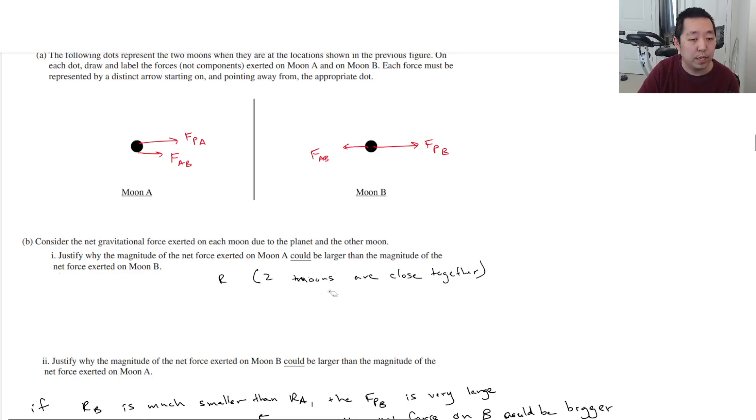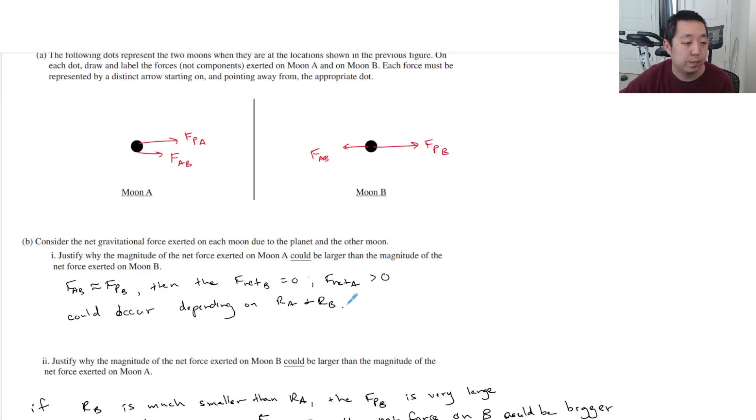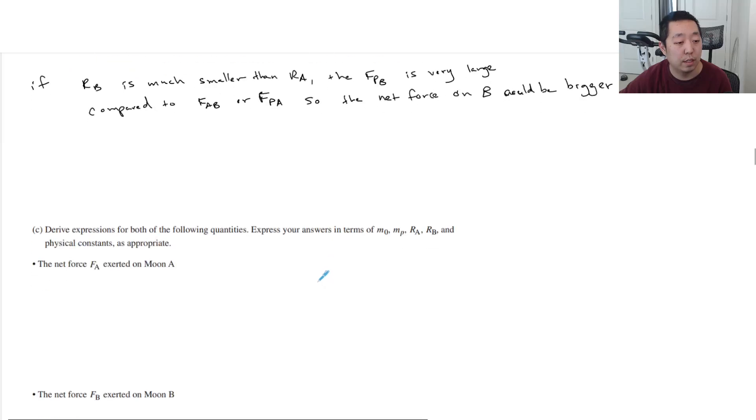Well, no, actually, let's do it where we just make moon B's net force zero. Like we could just say where this guy, the net force could be zero. So if FAB was about equal to F planet on B, then the net force on B would equal zero and the net force on A would be non-zero, right? And so it would be greater than zero. Because we're basically saying if these two cancel each other out, that could occur depending on the positions, on RA and RB.